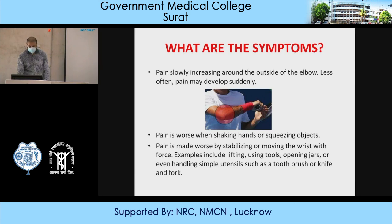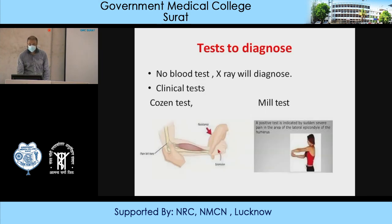The clinical tests to diagnose tennis elbow and golfer's elbow are the Cozen test and the Mills test.